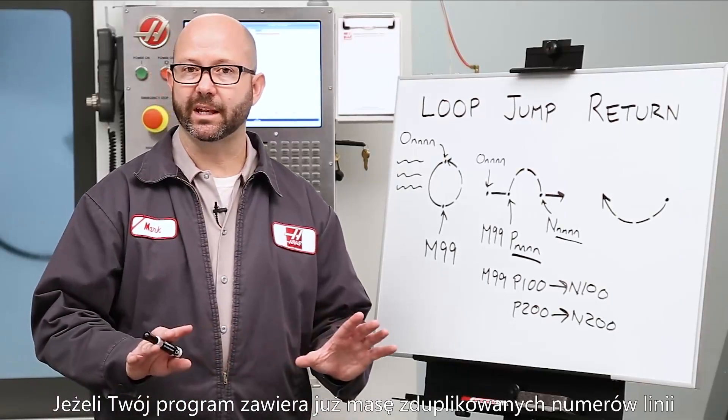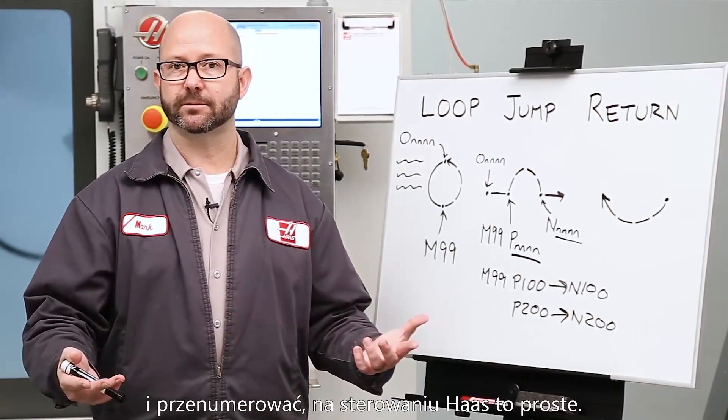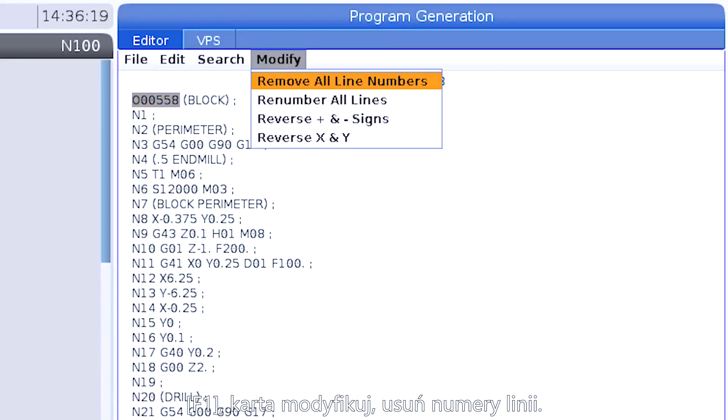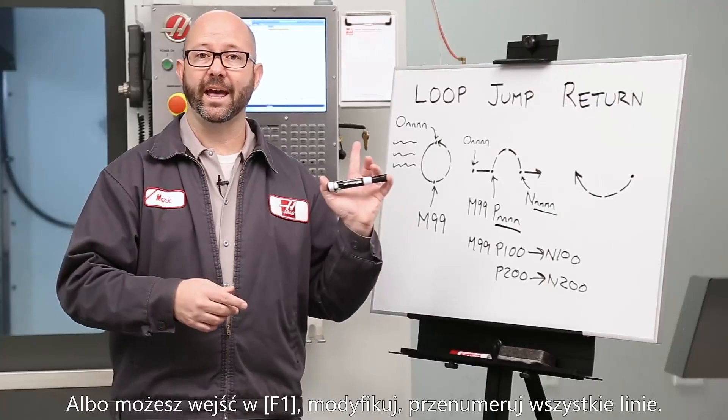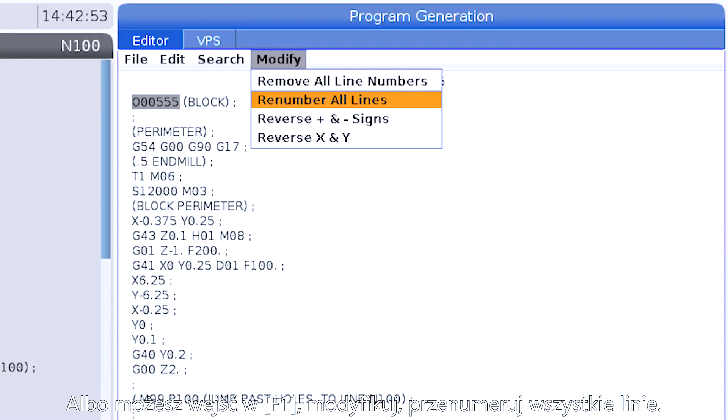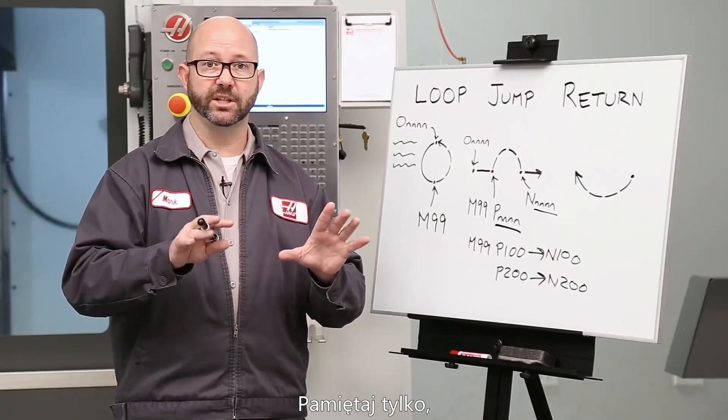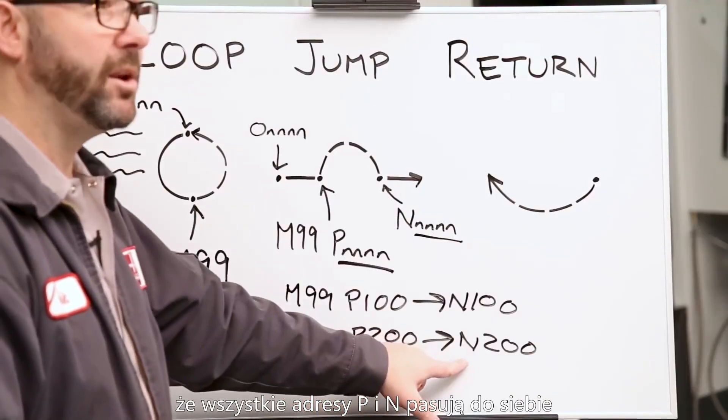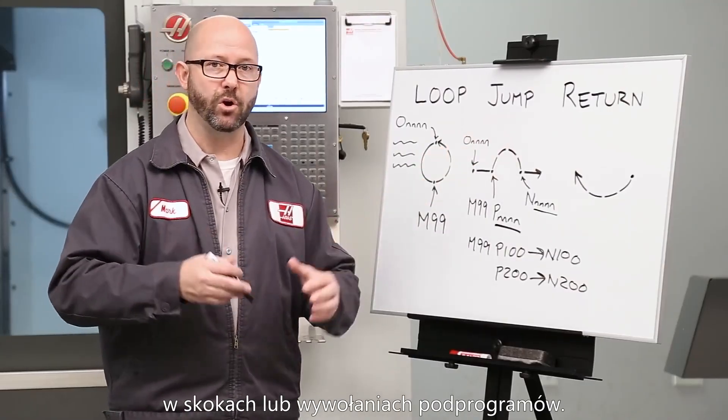If you have a bunch of duplicate N line numbers and you want to clear them out and renumber things, it's easy on a Haas. Just go to your control and press Edit, F1, Modify, Remove All Line Numbers. That'll clear all your N line numbers. Or you could go to Edit, F1, Modify, Renumber All Lines. That'll add all new N numbers to your program. Just remember, when you're done, you have to make sure that all of your P and N numbers correspond if they're being used in a jump or a subprogram of some kind.